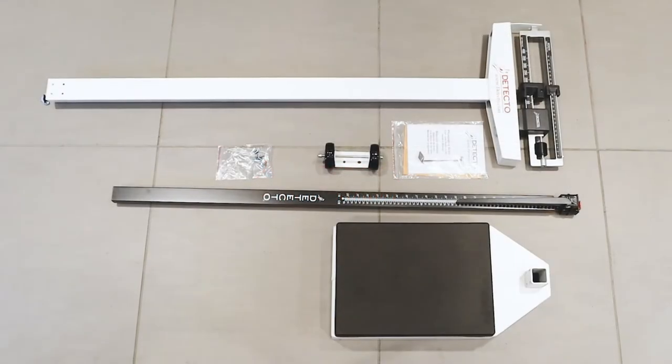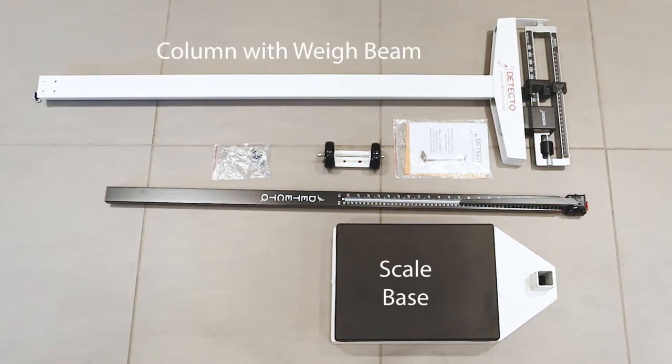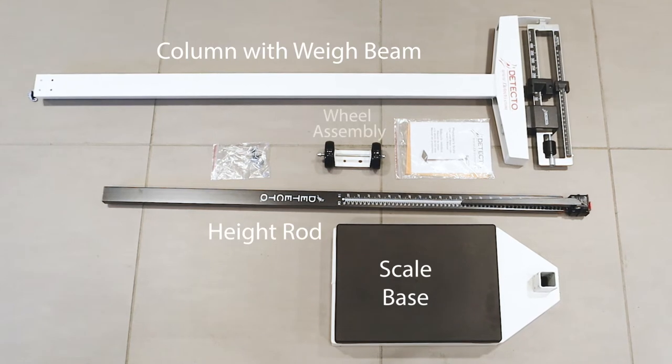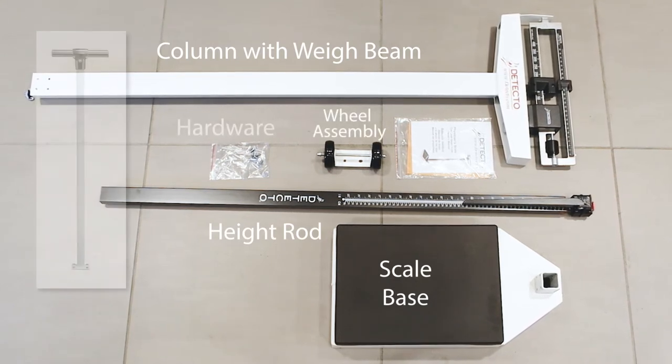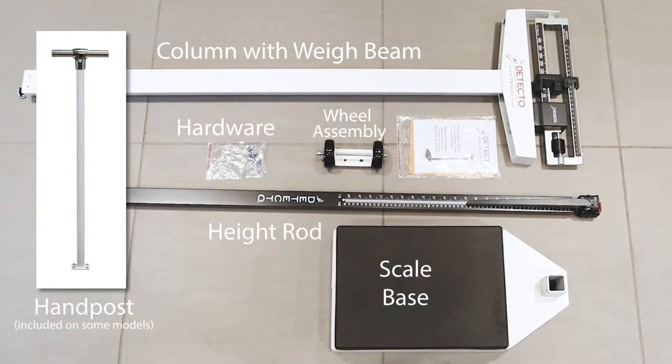On unpacking the carton, it should contain the column with way beam headpiece, the scale base with platform cover, a height measuring rod, the wheel assembly, and a hardware kit containing a wrench and eight screws and washers. Some models include a hand post.